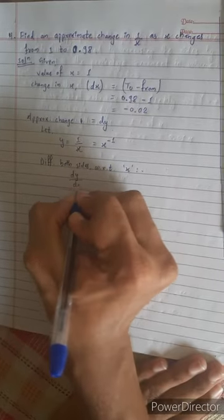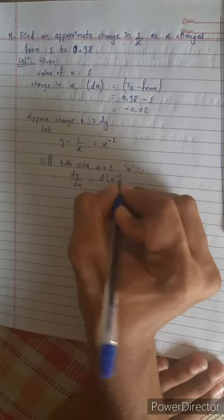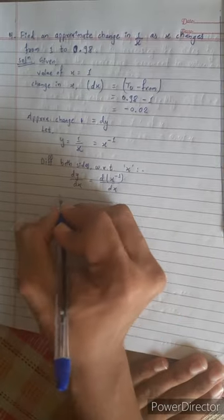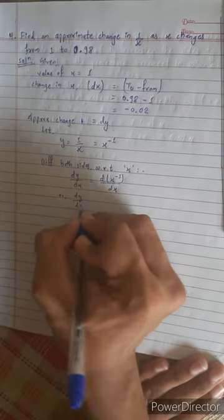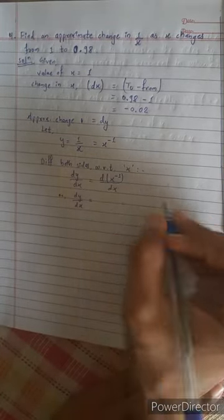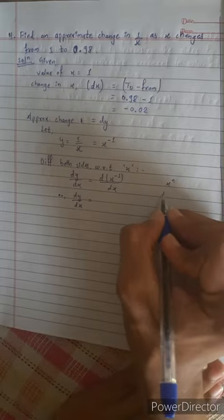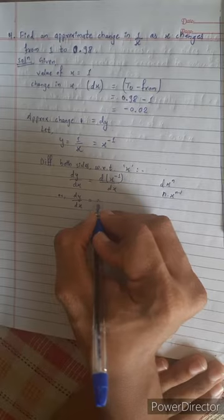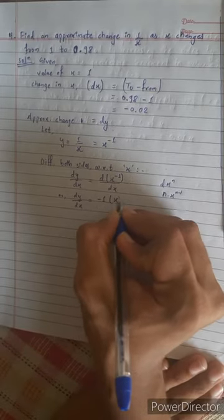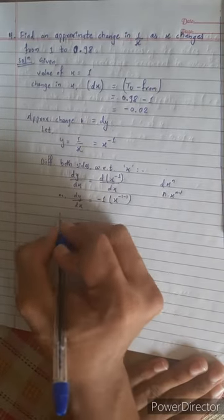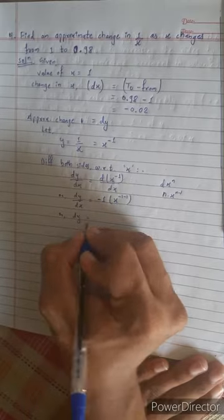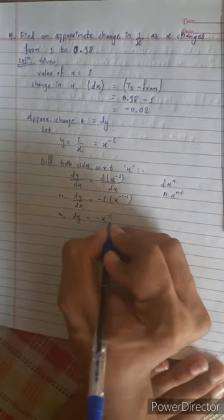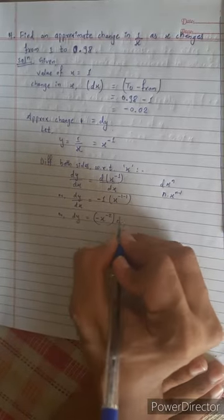dy by dx equals d of x power negative 1 by dx. Using the formula d/dx of x^n equals n·x^(n-1), we get dy by dx equals negative 1·x^(negative 2). Therefore dy equals negative x^(negative 2)·dx, or dy equals negative 1 by x²·dx.